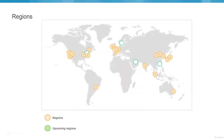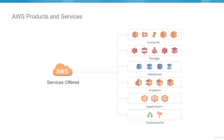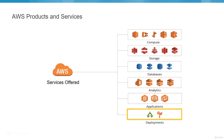AWS has 16 regions across the globe with more coming soon. These regions are isolated geographic locations with data centers. Multiple availability zones within each region provide better disaster recovery and high availability for each service. AWS provides a wide variety of services in the categories of compute, storage, databases, analytics, applications, deployments, and many more.